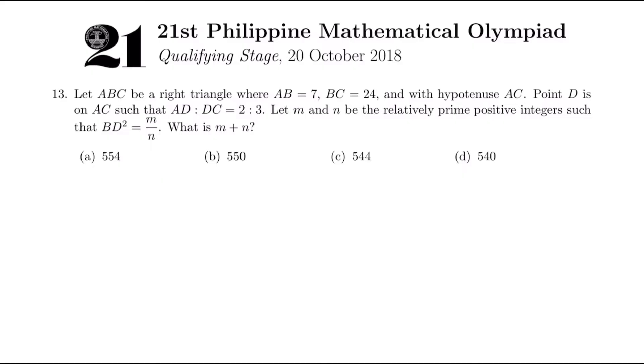Let ABC be a right triangle where AB equals 7, BC equals 24, and with hypotenuse AC. Point D is on AC such that AD is to DC is 2 is to 3. Let M and N be relatively prime positive integers such that BD squared equals M over N. Relatively prime, meaning the GCD is 1, so BD squared can be expressed in lowest terms as M over N, and then we're asked to get M plus N. Let's see what the sum of the numerator and the denominator of the value of BD squared.